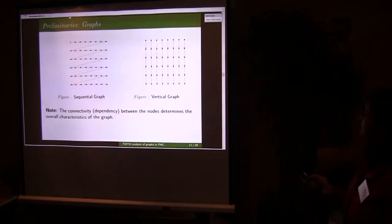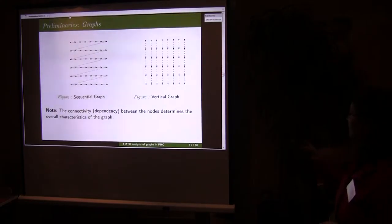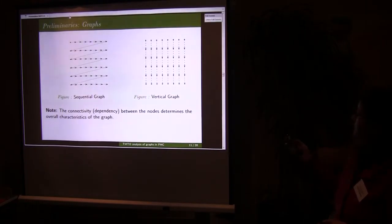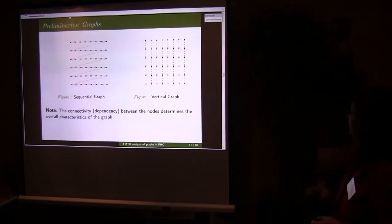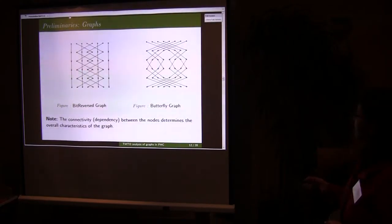These are some simple graphs. The name of the graph is derived from the dependency between the nodes. This is sequential because all the nodes are dependent sequentially. This is vertical graph. This bit reverse graph satisfies the bit reversal permutation. And this is butterfly graph.